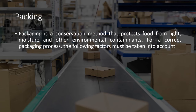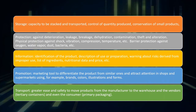Packaging is a conservation method that protects food from light, moisture, and other environmental contaminants. For a correct packaging process, the following factors must be taken into account. Number 1 is storage: capacity to be stacked and transported, control of quantity produced, and conservation of small products. Number 2 is protection: against deterioration, leakage, and breakage; dehydration, contamination, theft, and alteration; physical protection against shock, vibration, compression, and temperature; and barrier protection against oxygen, water vapor, dust, and bacteria.